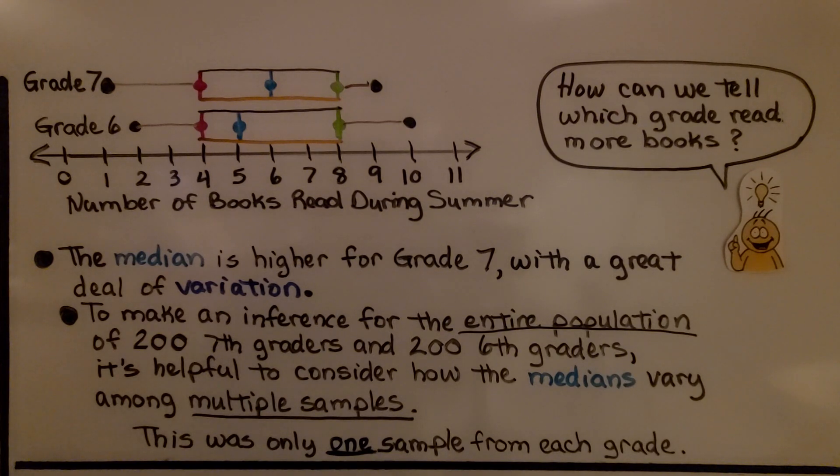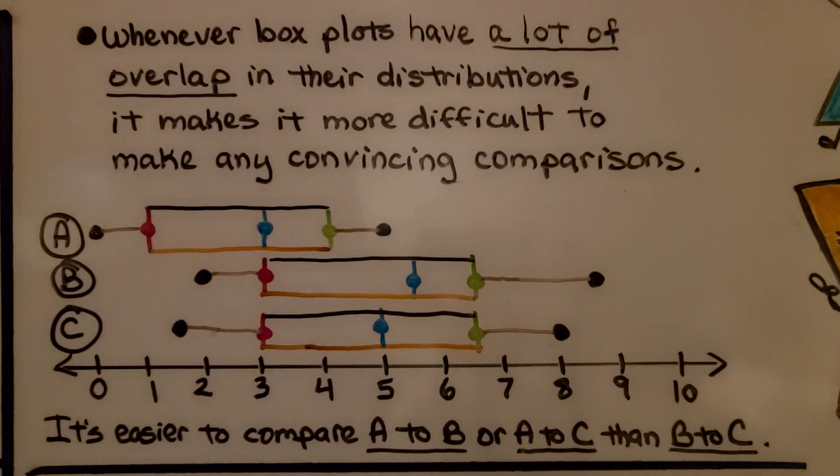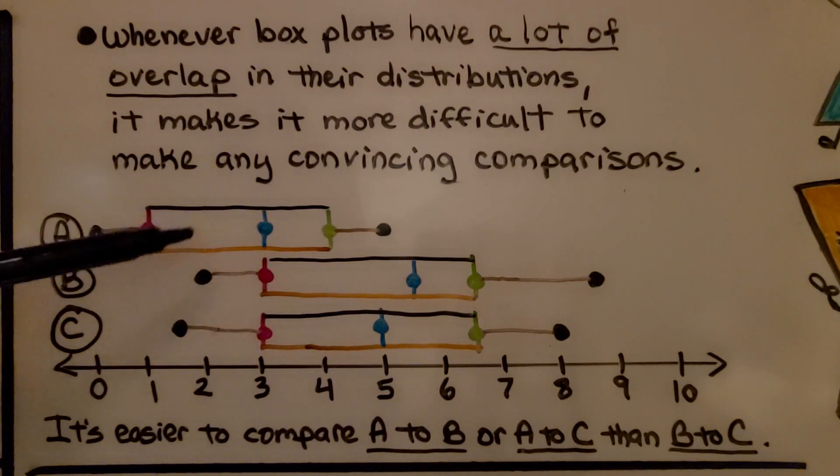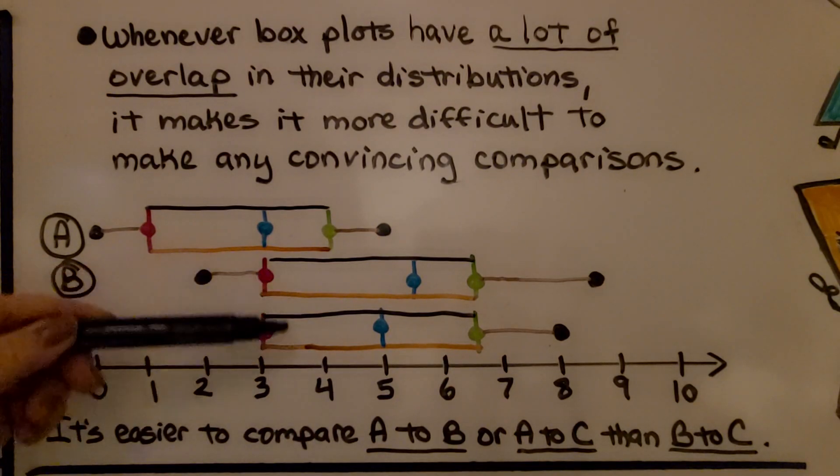It's more difficult to make any convincing comparisons. Whenever box plots have a lot of overlap in their distributions, it makes it more difficult to make any convincing comparisons. So here we have three box plots, A, B and C. Maybe it's easier to compare A to B because they're not overlapping as much or A to C than it would be to compare B to C.